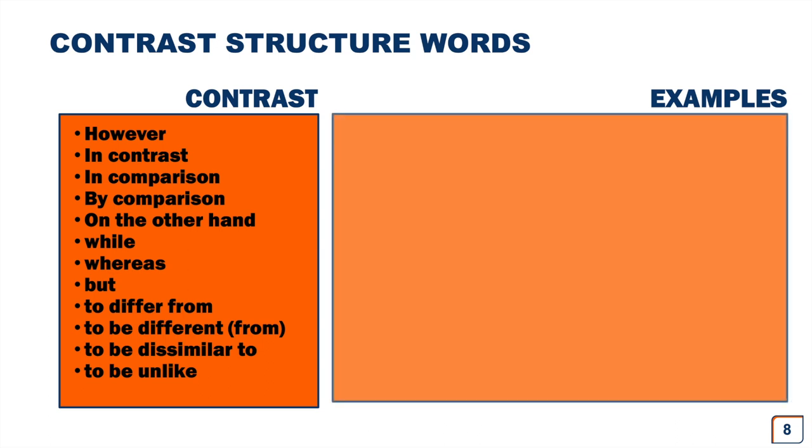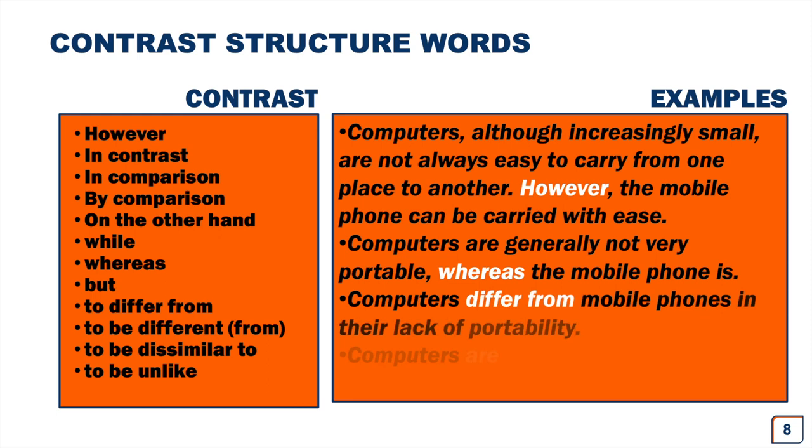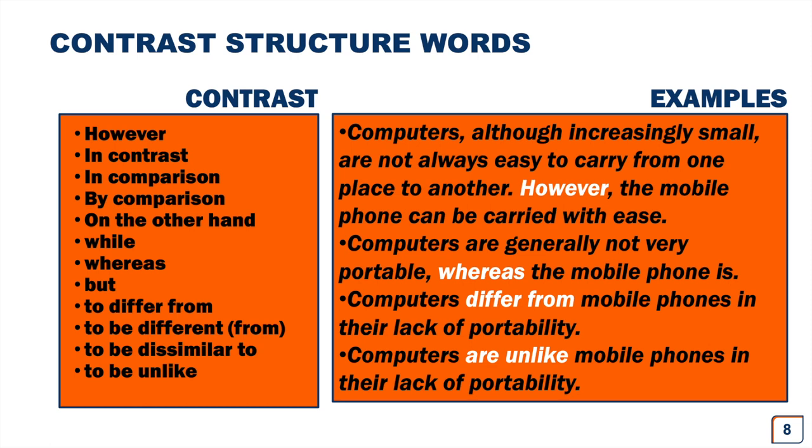Let's just take a look at some examples. Computers, although increasingly small, are not always easy to carry from one place to another. However, the mobile phone can be carried with ease. Here we use the structure word however. The second example: Computers are generally not very portable, whereas the mobile phone is. So whereas here, we used it to contrast computers and mobile phones again. Let's take a look at the third example. Computers differ from mobile phones in their lack of portability. Here we chose to use differ from. And our last example: Computers are unlike mobile phones in their lack of portability. Here we used to be unlike.